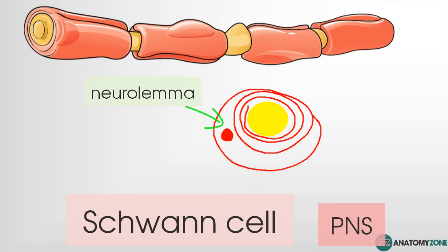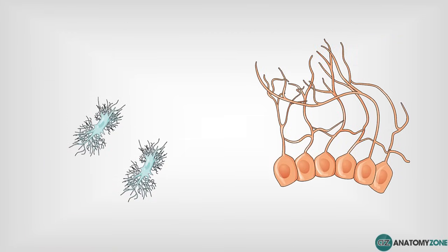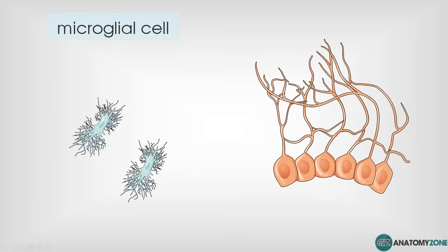The last two cells are the microglia and the ependymal cells — both cells of the central nervous system. The microglial cell, as the name indicates, is smaller than the other glial cells. Its function is really similar to that of a macrophage — to ingest cells and pathogens. It's thought that the microglial cell may have originated as white blood cells, as they're very similar to the macrophages of the immune system, giving microglial cells a role in immune support.